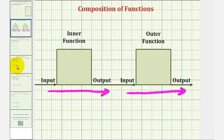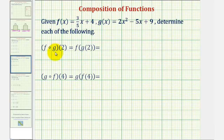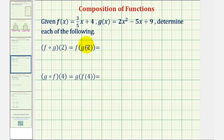Looking at our first example, notice how we can write a composite function two main ways. These two forms are equivalent, though the second form is easier to work with, because we can see the inner function would be g of two. So to find the value of f of g of two, we'll first determine g of two.